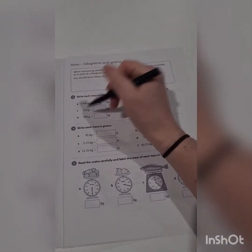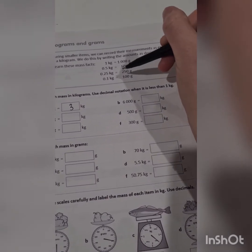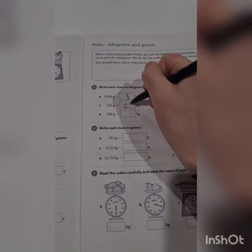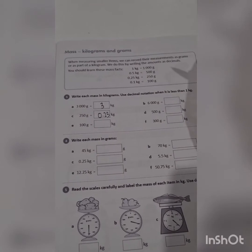3,000 grams is easy, it's just 3 kilos. 250 grams - now it's got a pretty good key up the top here. 250 grams is 0.25 kilos. Hopefully that will help you work out most of these questions.